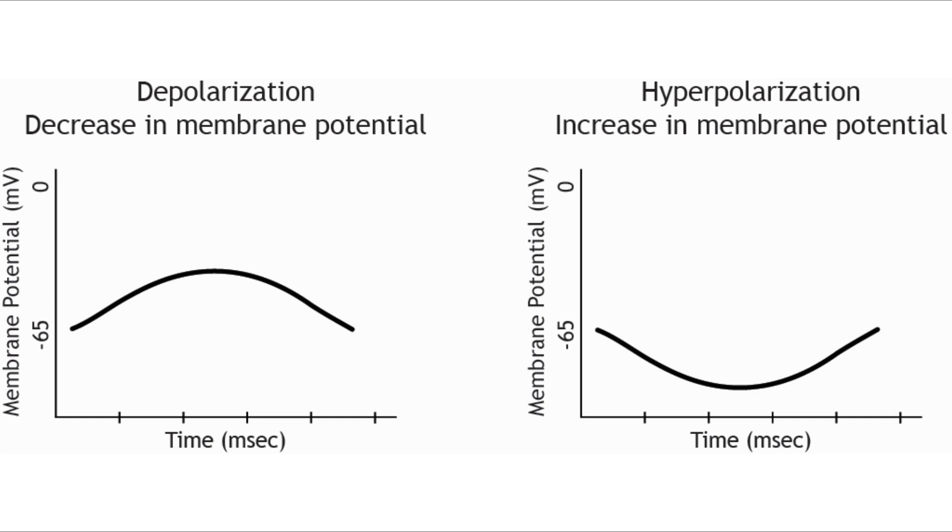And hyperpolarization occurs when the membrane potential moves away from zero millivolts, increasing the difference between inside and outside. And it's often described as an increase in membrane potential because the interior becomes more negative. For example, going from minus 65 millivolts to minus 75 millivolts, like you can see on the graph above.